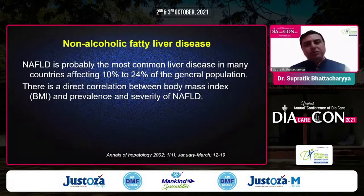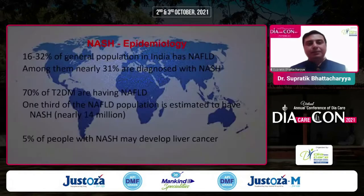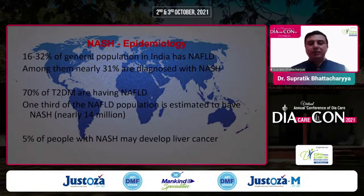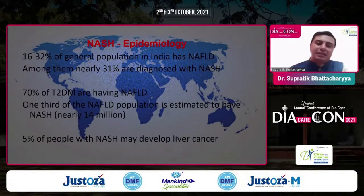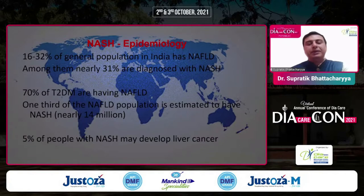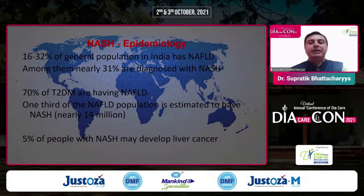NAFLD is probably the most common liver disease, affecting almost 10 to 24% of countries. In India, 16 to 32% of the general population has NAFLD; among them, almost 31% are diagnosed with NASH, 70% of type 2 diabetics have NAFLD, and one-third of the NAFLD population is estimated to have NASH — approximately 14 million. More than 90 million people in India are suffering from prediabetes with absolutely no idea, because they are completely asymptomatic, but the damage is already being done.